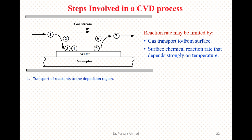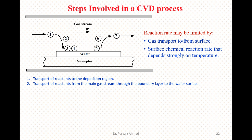Step number one is the transport of reactants to the deposition region. Step number two is the transport of reactants from the main gas stream through the boundary layer to form the vapor surface.